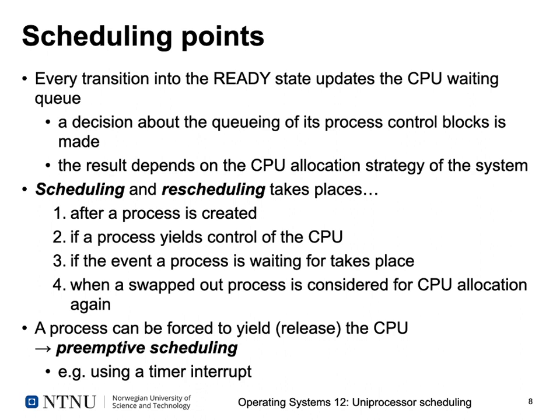Let's talk about the points at which scheduling can actually take place. Every transition into a ready state requires updating the CPU waiting queue. The operating system must decide where the process control block being transitioned to ready is placed in the ready queue. Processes could be inserted at the back, or given an earlier place based on priority. Where a process ends up in the ready queue depends on the CPU allocation strategy of the system.